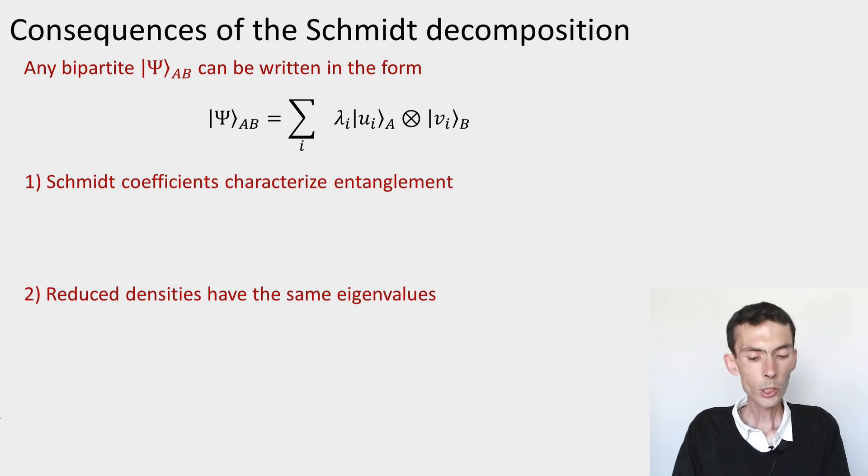So why is this decomposition interesting? We have a canonical form for every pure state of a bipartite system A and B. And there's a lot of interesting things that we can read off about the state from the Schmidt decomposition. The first thing that we can read off it and which was our initial target is determine whether the state is entangled or not.